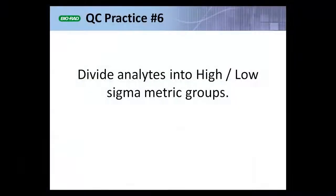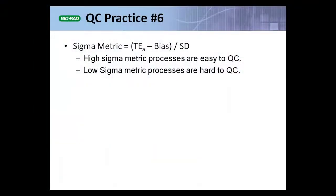My last QC practice recommendation is to divide your analytes into high and low sigma metric groups. The sigma metric is defined as: allowable total error — your quality requirement — minus any inherent laboratory bias, divided by your test method's imprecision SD.